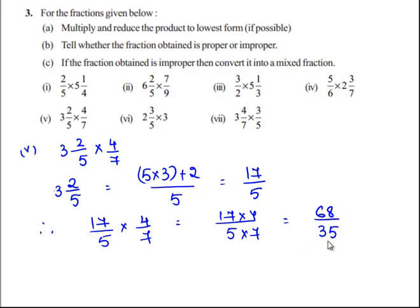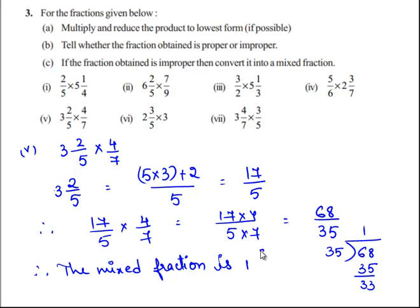To convert this into a mixed fraction we shall divide 68 by 35. 35 goes into 68 one time and the remainder left over is 33. Therefore the mixed fraction is 1 33/35.